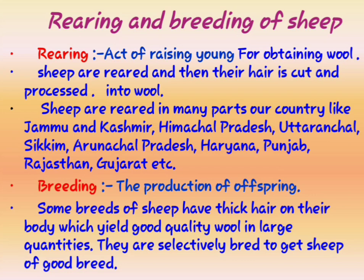Every farmer needs a good amount of yield. If the wool quality is less, he won't get a good price. So he wants sheep of good wool quality. What we do is select the parents — we select male and female sheep both having good quality wool, and allow them to produce their offspring. If both parents have good quality wool, obviously their offspring will also have good quality wool.